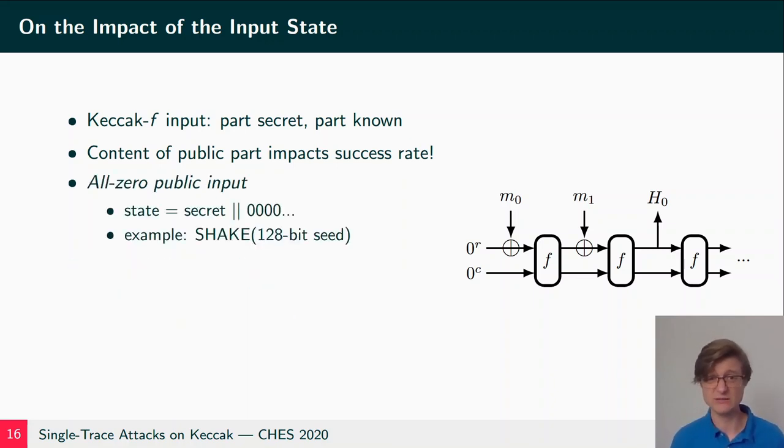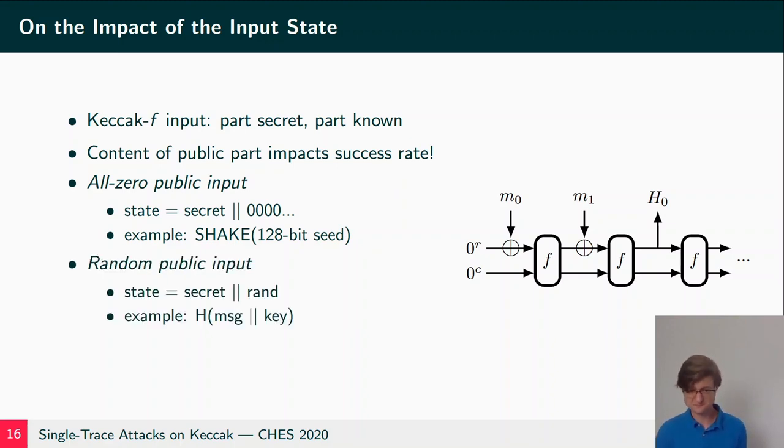The first we call all-zero public input. This can happen, for instance, if we just hash the secret seed. So the seed is in the first bits of M0, which is XORed onto the zero state, and then the other parts of the state is still zero before it goes into Keccak-f. The second scenario is called random public input. This is, for instance, if M0 contains a message and this message and the entire state is then squeezed through the F permutation. So we have then a random state and then we XOR M1, which might contain the key.